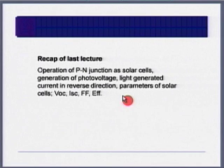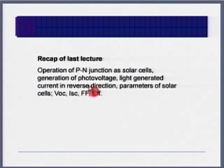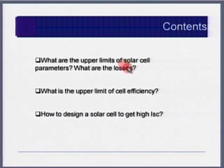To recap: yesterday we covered operation of a p-n junction solar cell, generation of photo voltage, light-generated current in reverse direction, and parameters VOC, ISC, fill factor, and efficiency. Today we are going to look at the details of solar cell operation from the device perspective — how the solar cell should be designed to get the highest possible efficiency. Today's two lectures are focused mainly on the design of a solar cell.